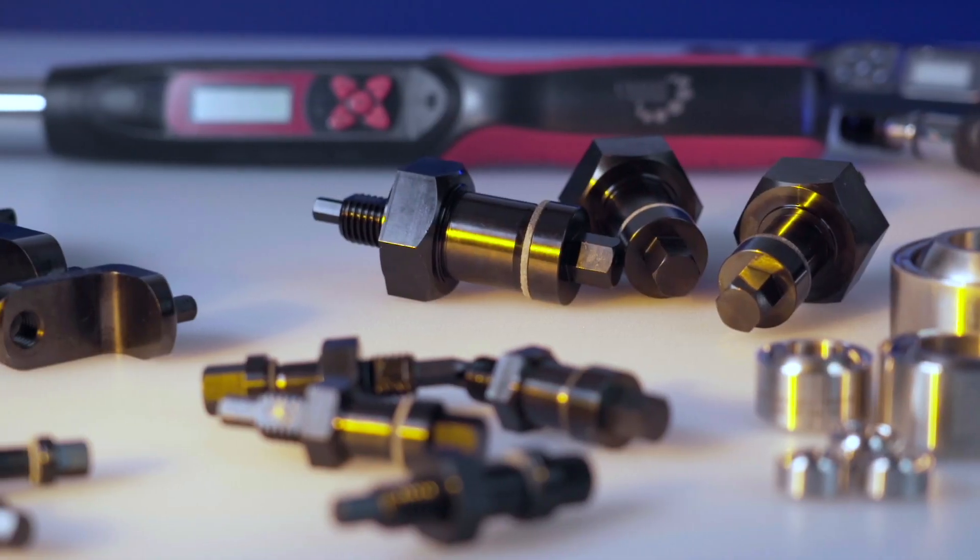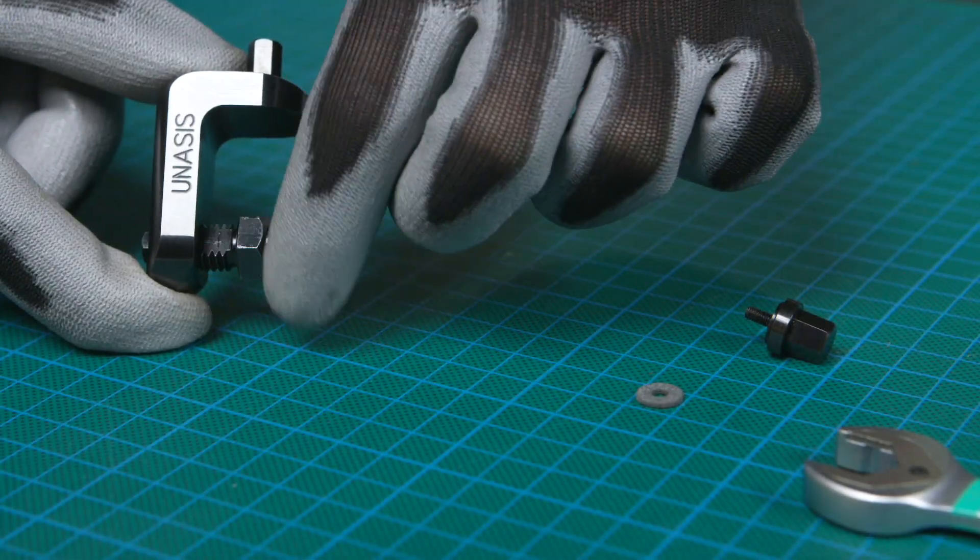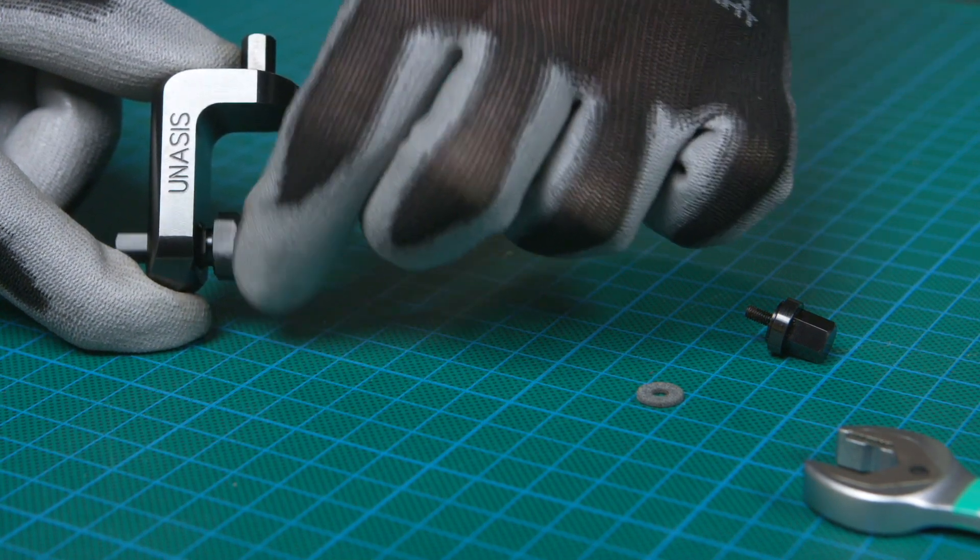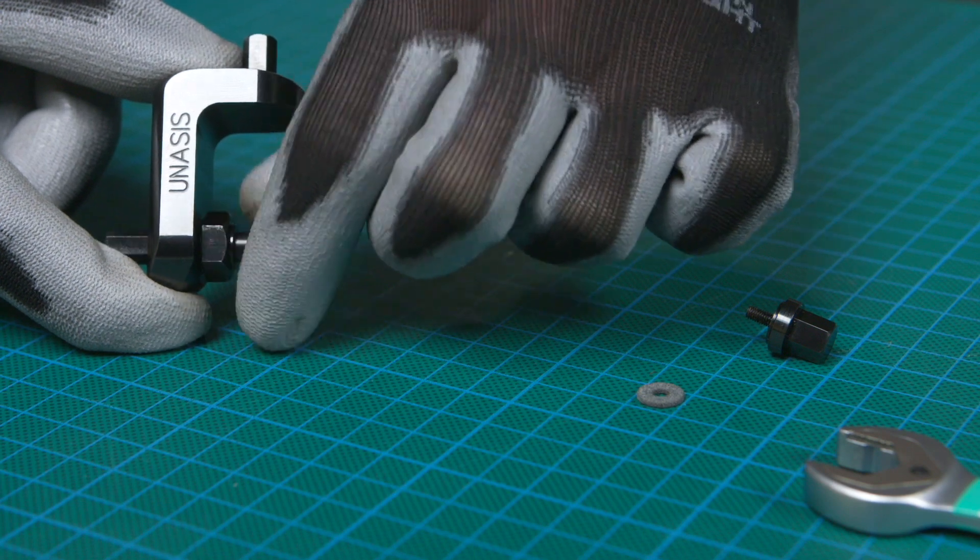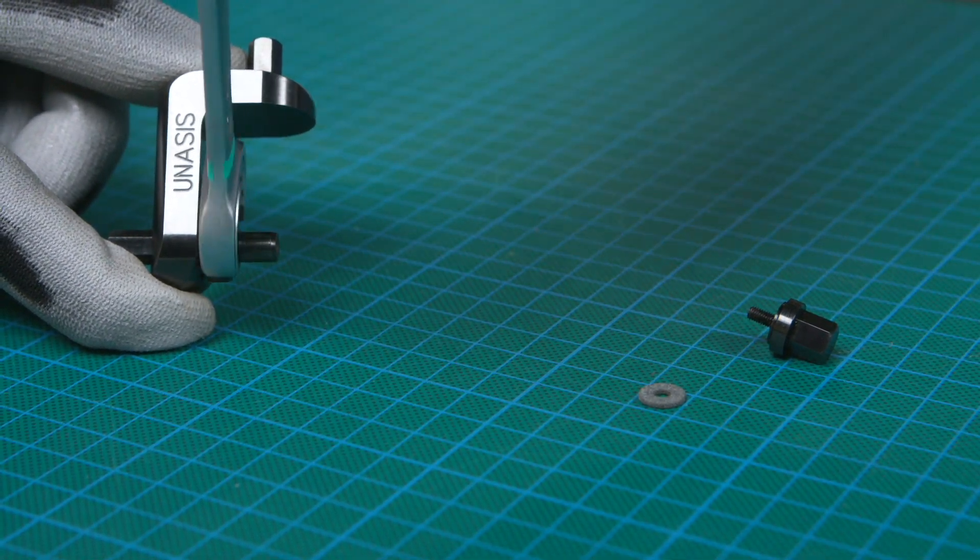The tool body is designed for use with a range of different bearing sizes. To assemble, first thread the shaft into the tool body. Use a spanner to tighten the shaft, as finger-tight will not be sufficient.